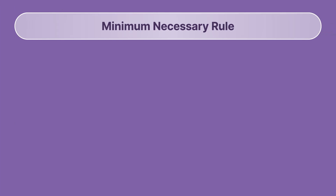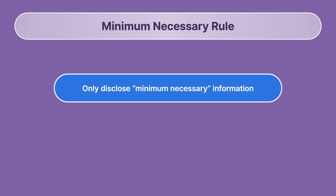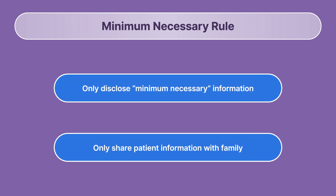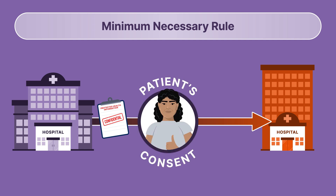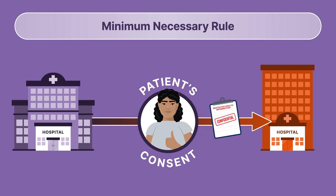Additionally, health care workers should follow the minimum necessary rule when sharing patient information with others involved in care. Only disclose the minimum necessary information required, and only share patient information with the patient's family members or other entities if the patient has given explicit permission to do so. For example, if one hospital wanted to share or disclose PHI with another hospital or any other entity, they are not allowed to do so without that patient's consent. This rule also provides patients the right to request and obtain a copy of their medical records.